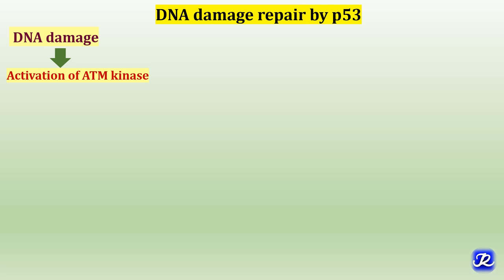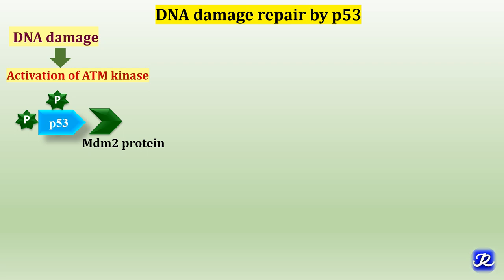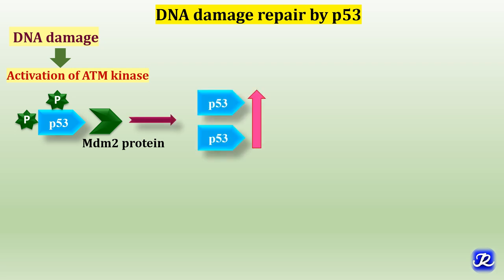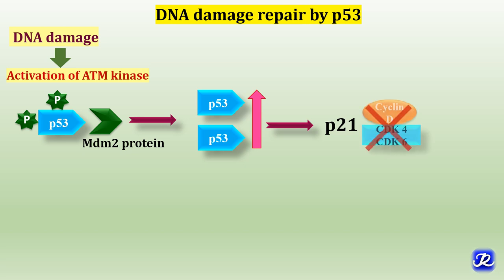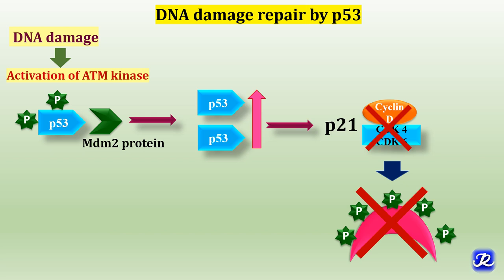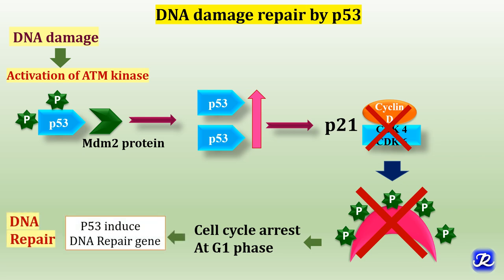The second action of P53 is DNA damage repair. DNA damage leads to activation of ATM kinase, which in turn phosphorylates P53, preventing MDM2 protein from binding. So P53 cannot be degraded and its level increases. This increases transcription of P21 CDK inhibitor, which inhibits cyclin-dependent kinases, leading to blockage of RB protein phosphorylation and cell cycle arrest at G1 phase — giving the cell time to repair DNA damage. P53 also induces expression of DNA damage repair genes, directly participating in DNA repair.